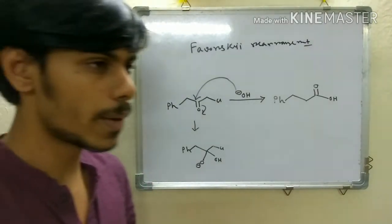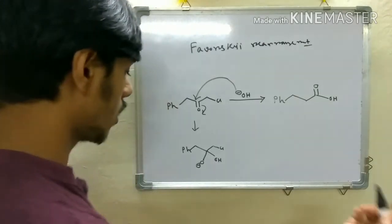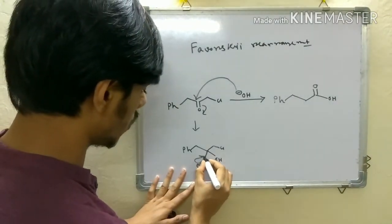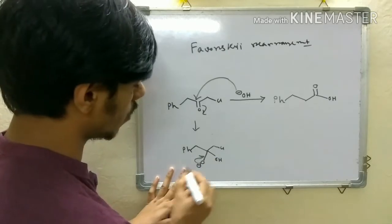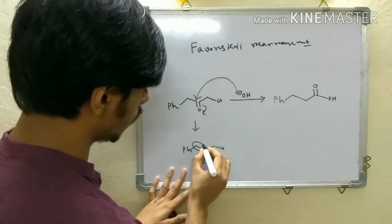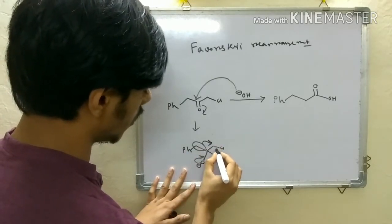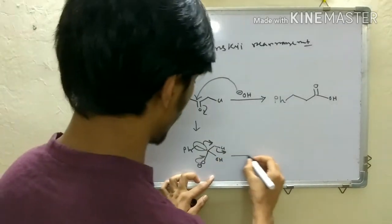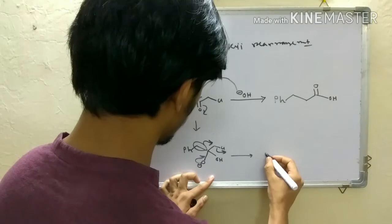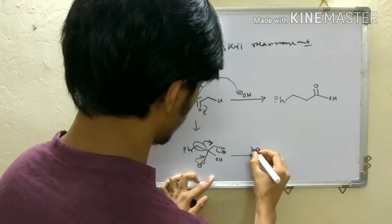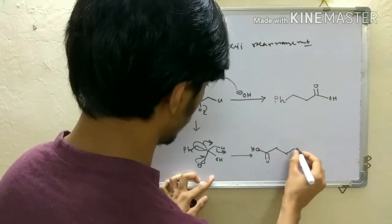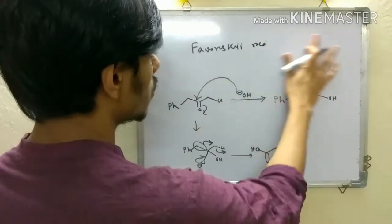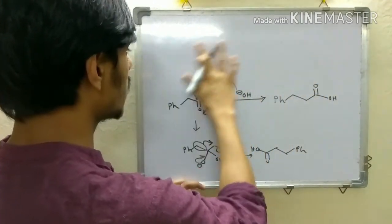If you know the pinacol-type reaction or the benzilic acid-type reaction, you will say that this O-minus will push its electrons here, and this group will migrate to this carbon atom, chlorine will leave as a leaving group, and you will be getting this acid. So if this is the mechanism...